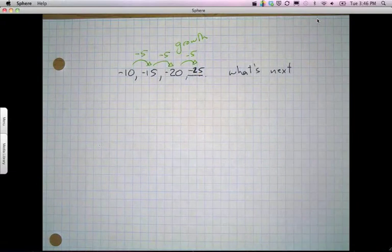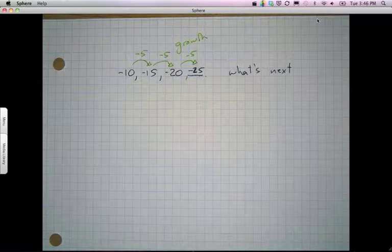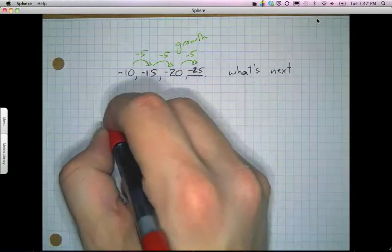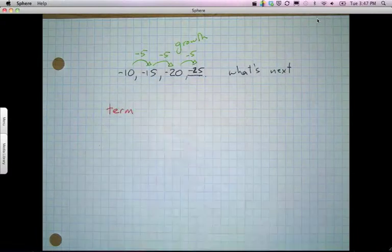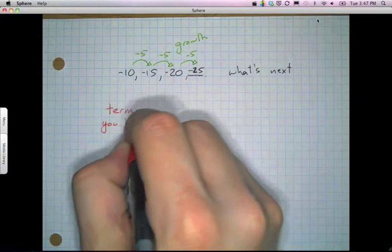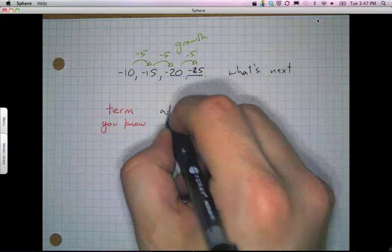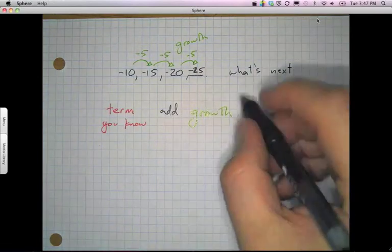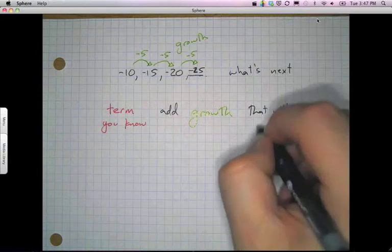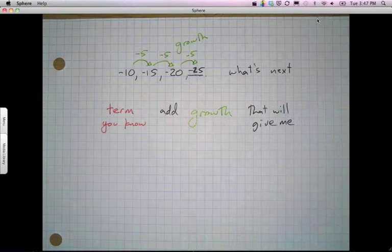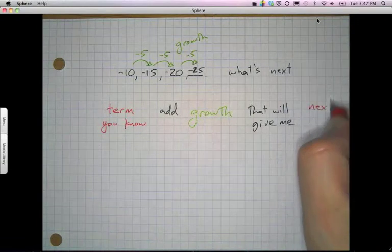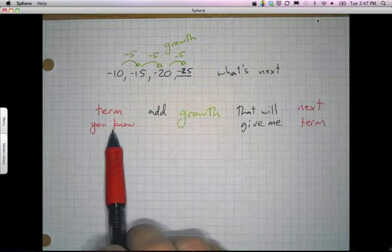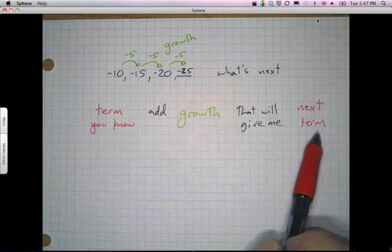If I want to turn that into a recursive form, what I could do is notice this. If I want to find the next term, I take the term that I'm on and I add my growth, that will give me the next term. If you think about this, this is the basic idea behind a sequence. You take whatever you've got and you add a constant amount to it, and that will give you the next term in your sequence.